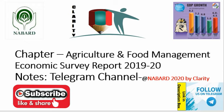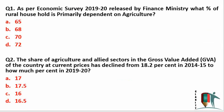Welcome back to yet another new chapter by Clarity — this chapter on the reason MCQs based on agriculture and food management, taken from Economic Survey Report 2019-20. This survey forms a very important part. Please subscribe and share our channel and follow us on Telegram; the link is in the description box. I would suggest you invest around 30 to 45 minutes daily in revising the Economic Survey 19-20, as many questions will be asked from this.